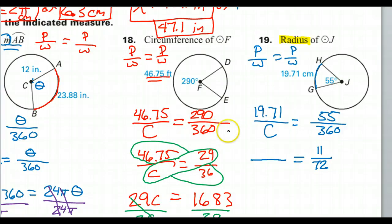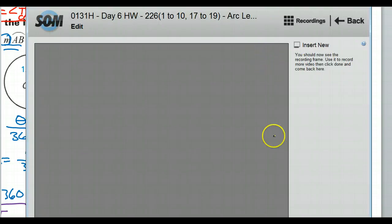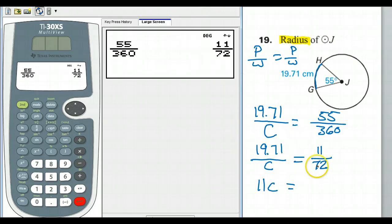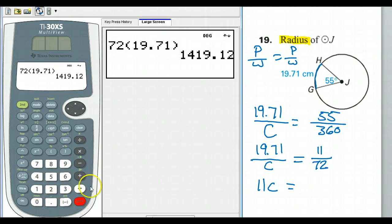It is very important that we get to the bottom of this problem. So, 19.71 over C. We will find C but we won't be done. So let's cross multiply. If we do that, C times 11, that's 11C. Now 72 times 19.71, let's see if that makes a nice number that we can work with. 72 times 19.71, 1,419.12. We can work with that.